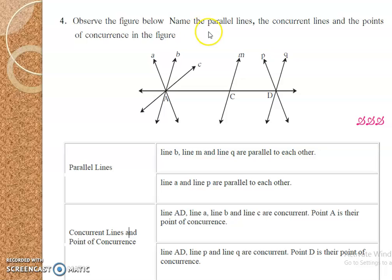Observe the figure below. Name the parallel lines, the concurrent lines, and the point of concurrence in the figure. Parallel lines: Line B, Line M, Line Q, Line A and line P are parallel to each other. Concurrent lines and point of concurrence: Line AD, Line A, Line B and line C are concurrent. Point A is their point of concurrence. Line AD, Line P, Line Q are concurrent and line D is their point of concurrence.